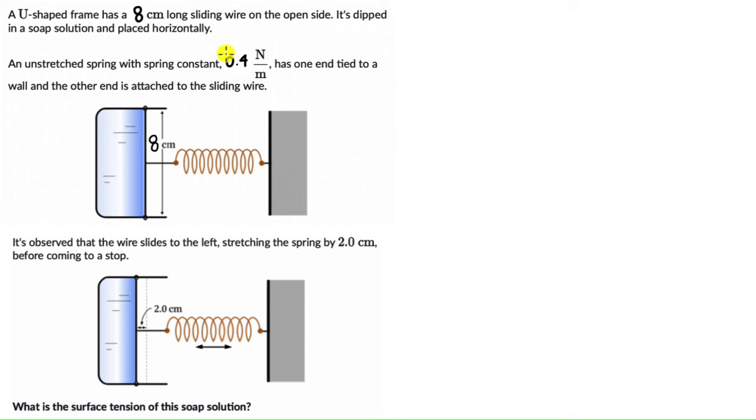A U-shaped frame has an 8 cm long sliding wire on the open side. It's dipped in a soap solution and placed horizontally. An unstretched spring with a spring constant of 0.4 N per meter has one end tied to a wall.